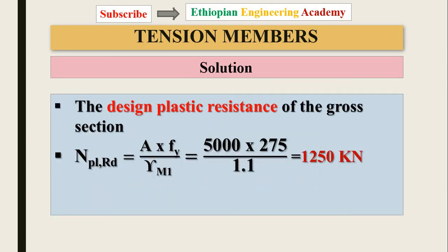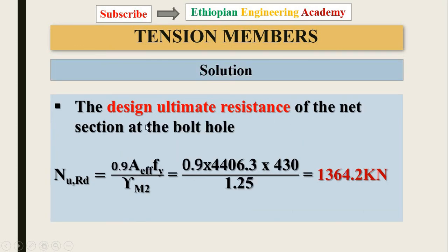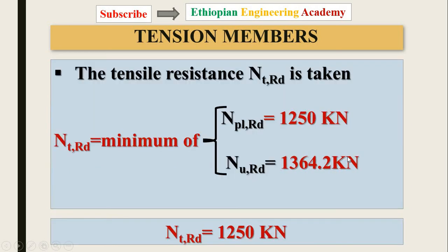The design plastic resistance uses the gross area: Npl,Rd = 5000 × 275 / 1.1 = 1250 kN. For the design ultimate resistance, the effective net area is the minimum of net area 1 and net area 2. Using Nu,Rd = 0.9 × Anet,eff × fu / γM2, we obtain the ultimate resistance. The tensile resistance is the minimum of the plastic and ultimate values, which in this case is the plastic resistance of 1250 kN.